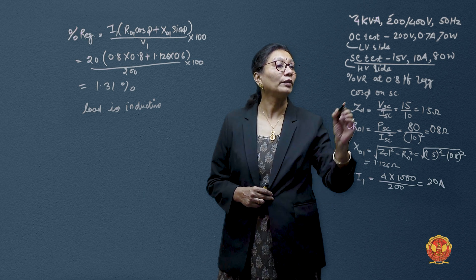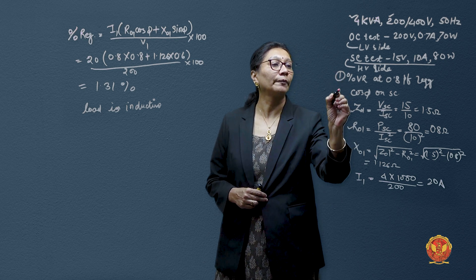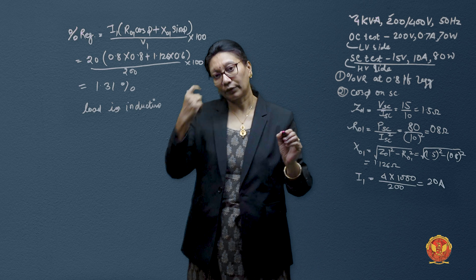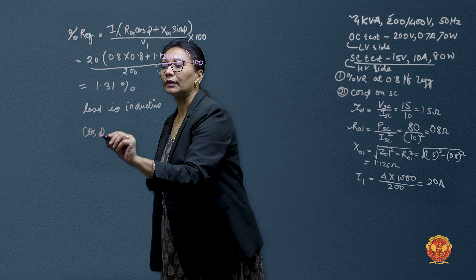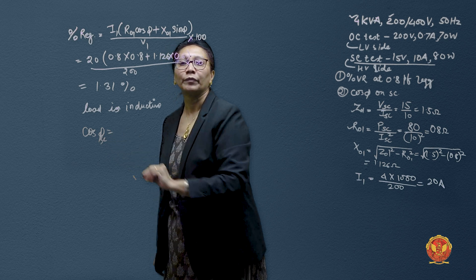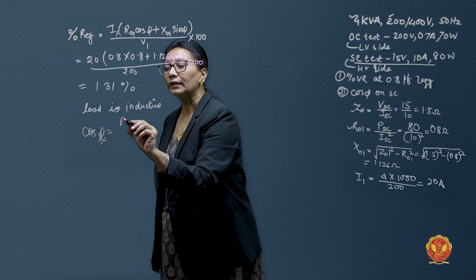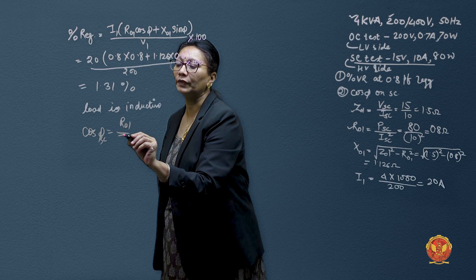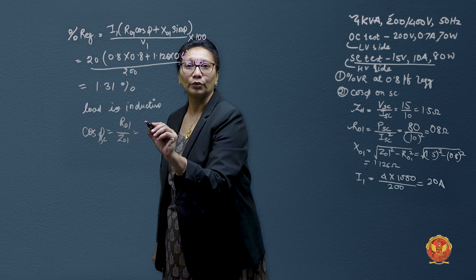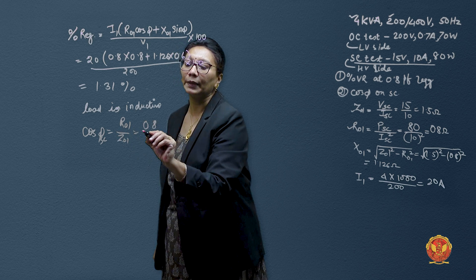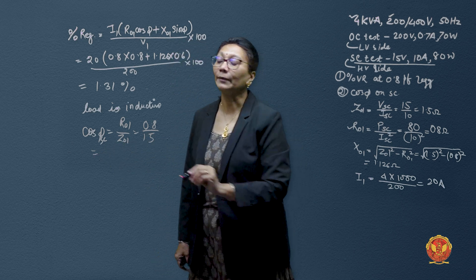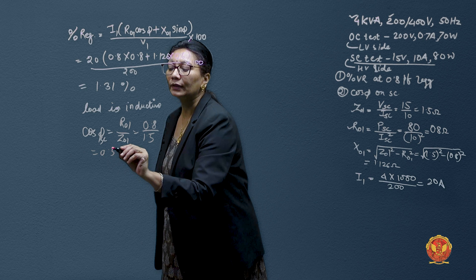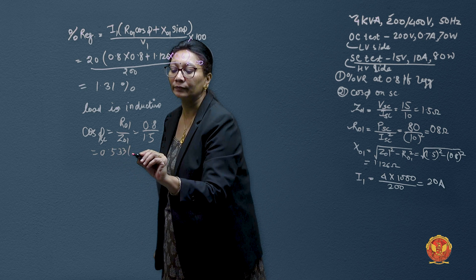But next what we had to calculate, one was this. Second, we have to find power factor in short circuit case. So power factor can be calculated in short circuit as R by Z. And both we have already calculated. So this would be 0.8 divided by 1.5. And therefore, power factor comes out to be 0.533 lagging.